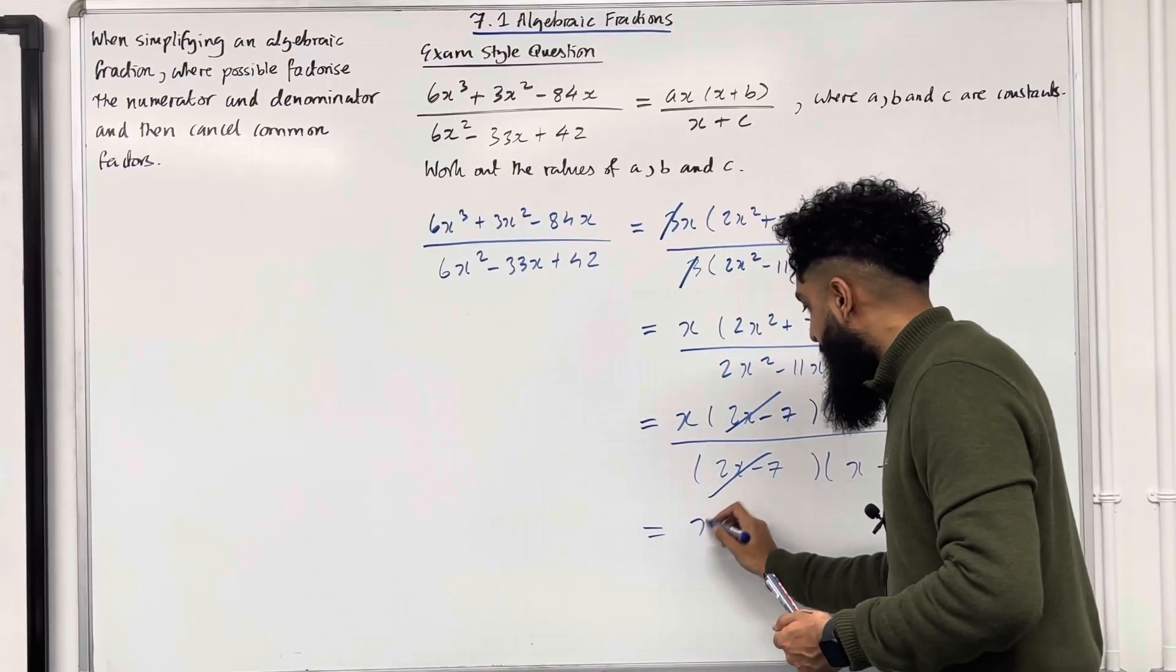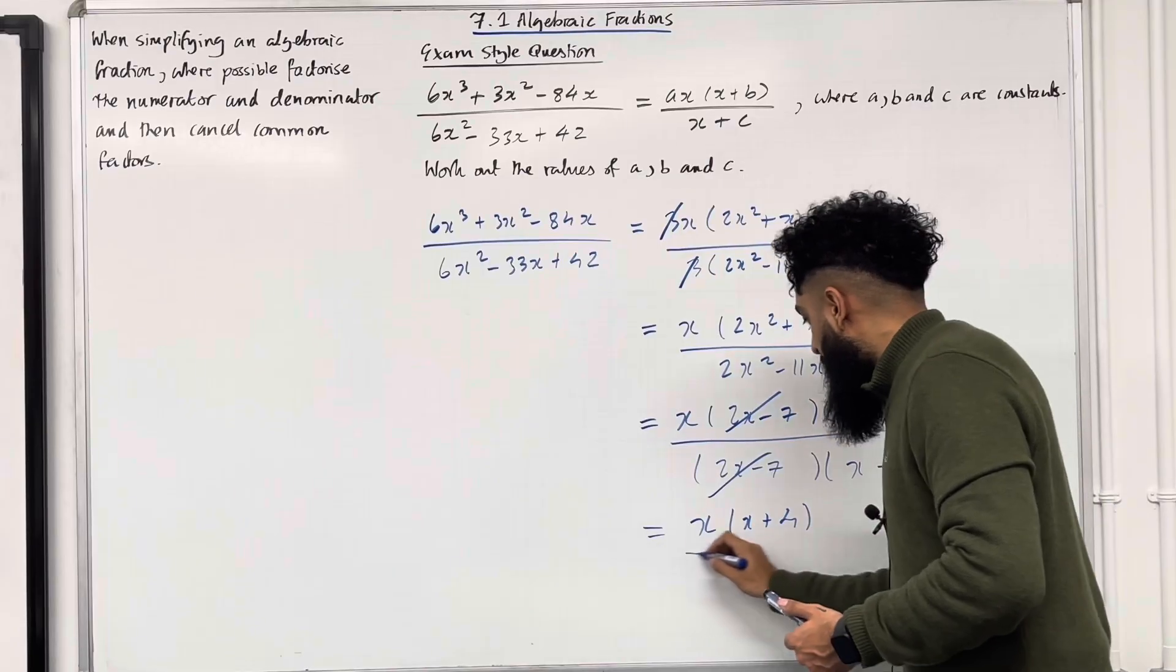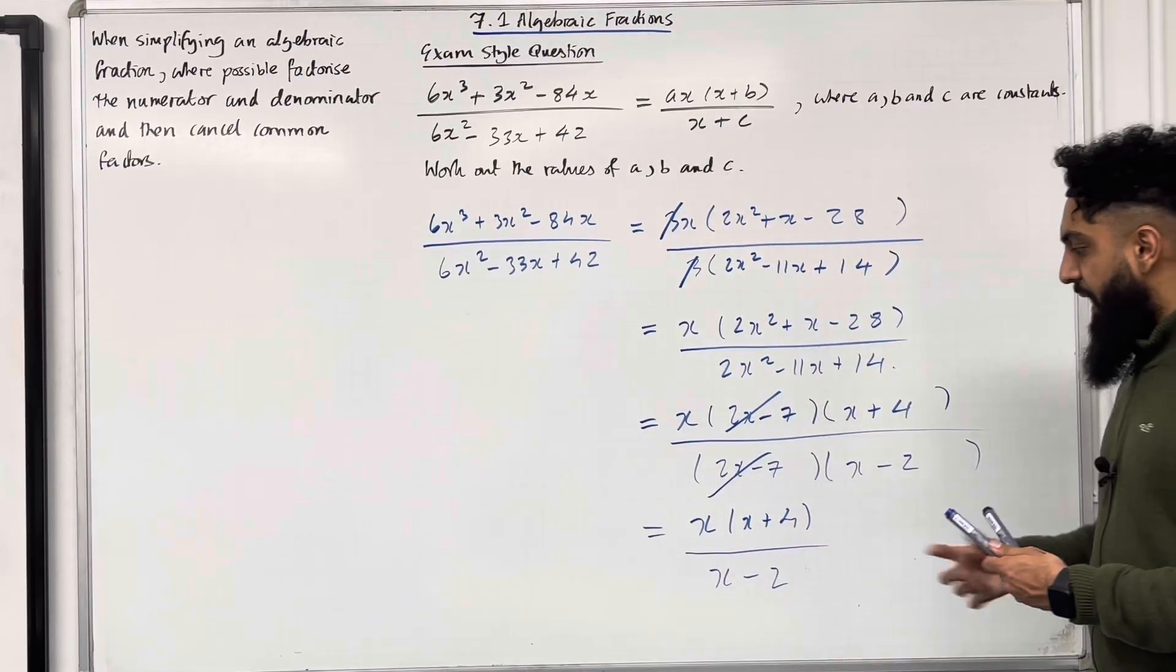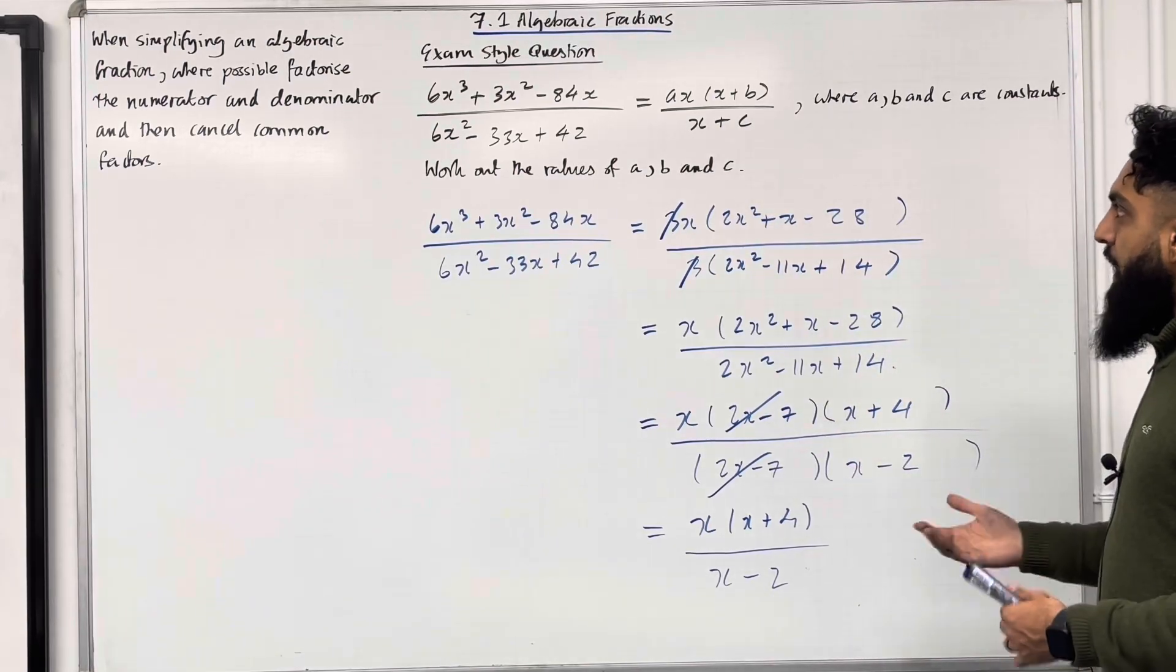This leads on to x multiplied by x plus 4 in brackets, all over x minus 2. And that there, ladies and gents, is the desired form. We now need to identify the a, b and c.